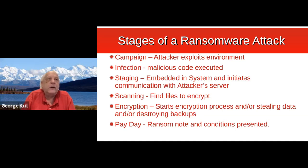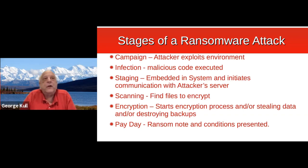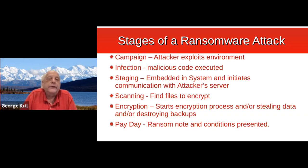They assess whether or not you have backups they can get hold of, and how much you'd be willing to pay. For example, if your whole operation is run by one person manually, there's not much they can demand. But if your entire process is controlled by the Internet of Things, they know they have a good victim. Once they know their targets, they start the encryption process, stealing data, or destroying backups. Then the final phase — payday — is where the ransom note appears and conditions are presented.